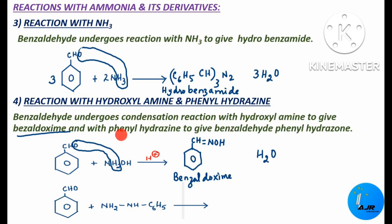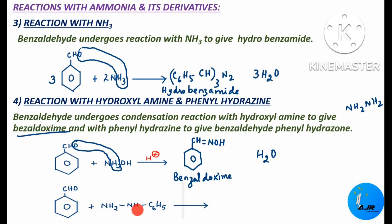Now what happens with phenylhydrazine? Hydrazine is NH2–NH2. Here, instead of one hydrogen there is one phenyl group — that is called phenylhydrazine. Benzaldehyde reacts with phenylhydrazine.